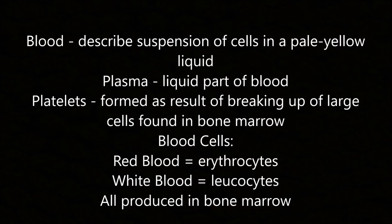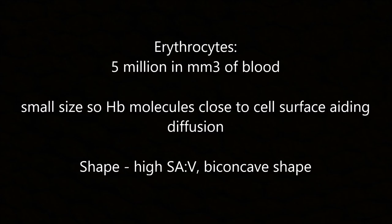Blood is a suspension of cells in a pale yellow liquid called plasma. Platelets are formed by the breaking up of large cells found in bone marrow. There are two types of blood cells: red blood cells (erythrocytes) and white blood cells (leukocytes), and these are all produced in the bone marrow.